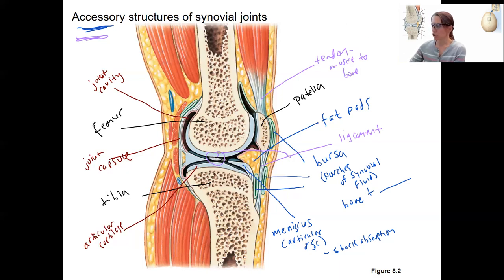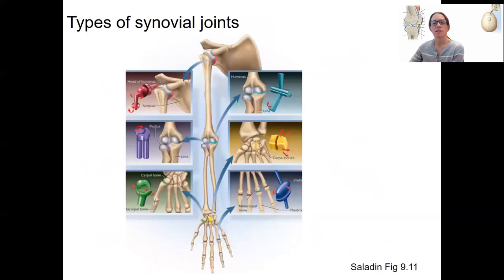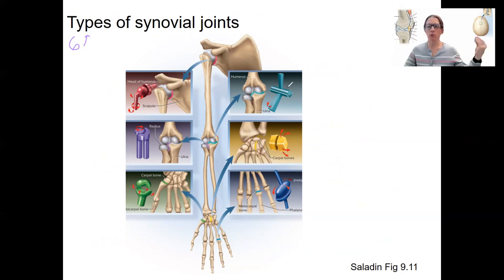Again, we'll see all these structures in context with several joints. Types of synovial joints — this classification is based on their movement. There are six types, based on how many types of movements these joints can make, described in terms of axes. Something that moves around one axis versus multiple axes.